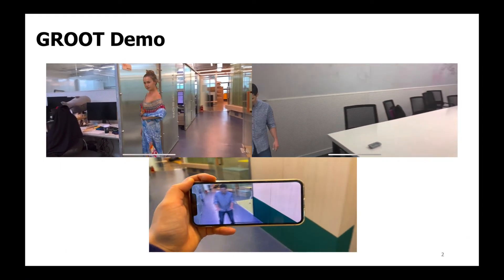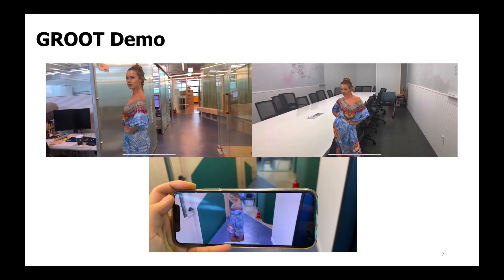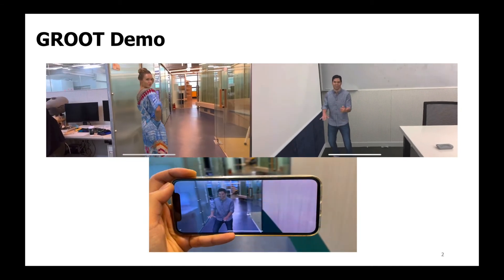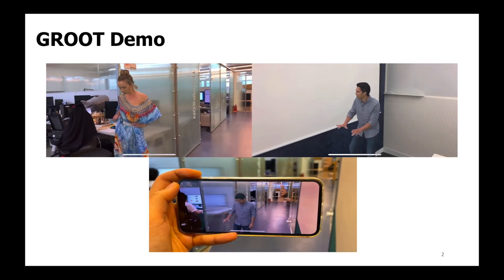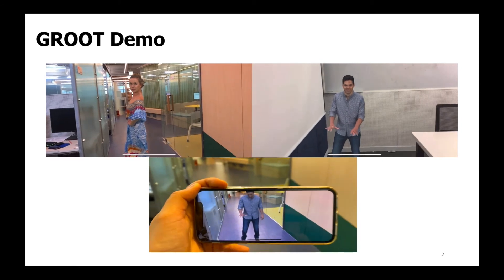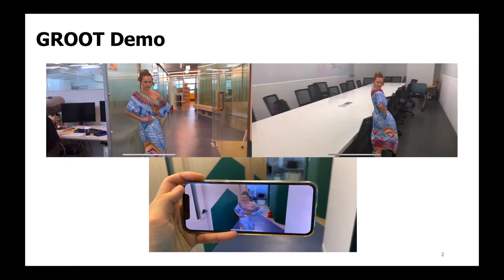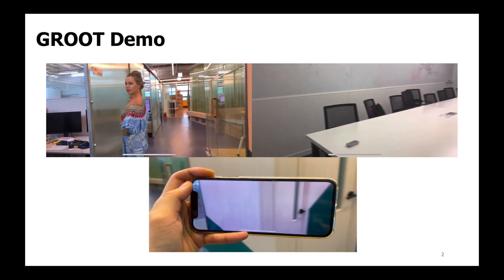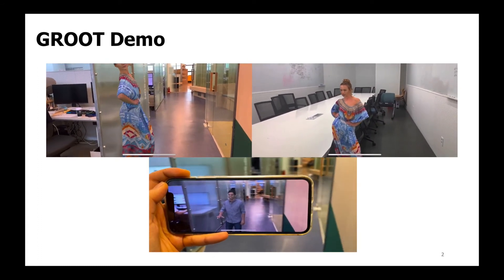Let me start with showing you a demo of GROOT. Volumetric video is considered the next-generation multimedia. It is represented by 3D data so that the user can move around in 6 degrees of freedom to view the content from any position. Volumetric videos can be conveniently played on smartphones with the recent development of augmented reality and virtual reality technologies. This can enable numerous applications such as telepresence, free viewpoint sports games, or performances.